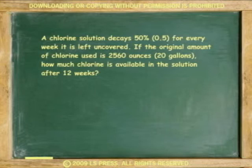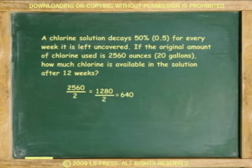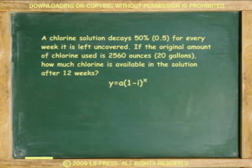If it decays 50% — half the amount — every week, after the first week there is only 2,560 ounces divided by 2, or 1,280 ounces left. After the second week there is half of that, or 640 ounces available, and so on. This problem fits the exponential decay pattern because the amount of chlorine drops rapidly. The exponential equation would be y equals a times 1 minus i to the x.